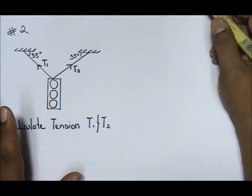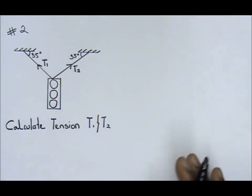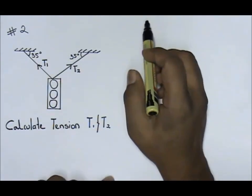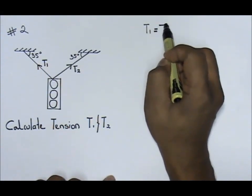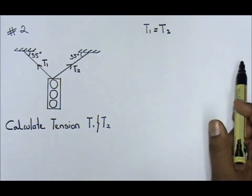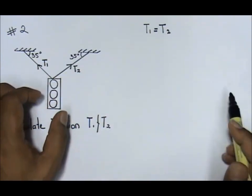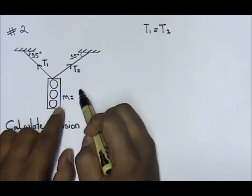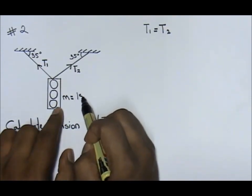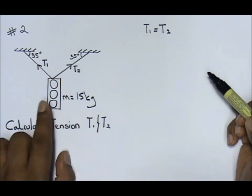Firstly, the thing that you need to understand is both angles are the same. If both angles are the same, it means that your T1 equals to T2. For questions like this, the mass of your traffic light is given to you as 15 kilograms. This mass 15 kilograms is given to you.